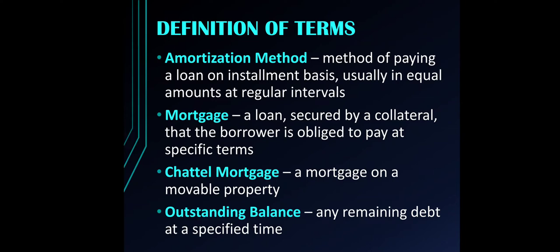This could either be monthly, bimonthly, or annually — however that may be, it has to be in equal amounts at regular intervals. Mortgage refers to a loan secured by a collateral that the borrower is obliged to pay at specific terms. Specifically, chattel mortgage is a type of mortgage on a movable property — for example, cars. Outstanding balance refers to any remaining debt at a specified time.